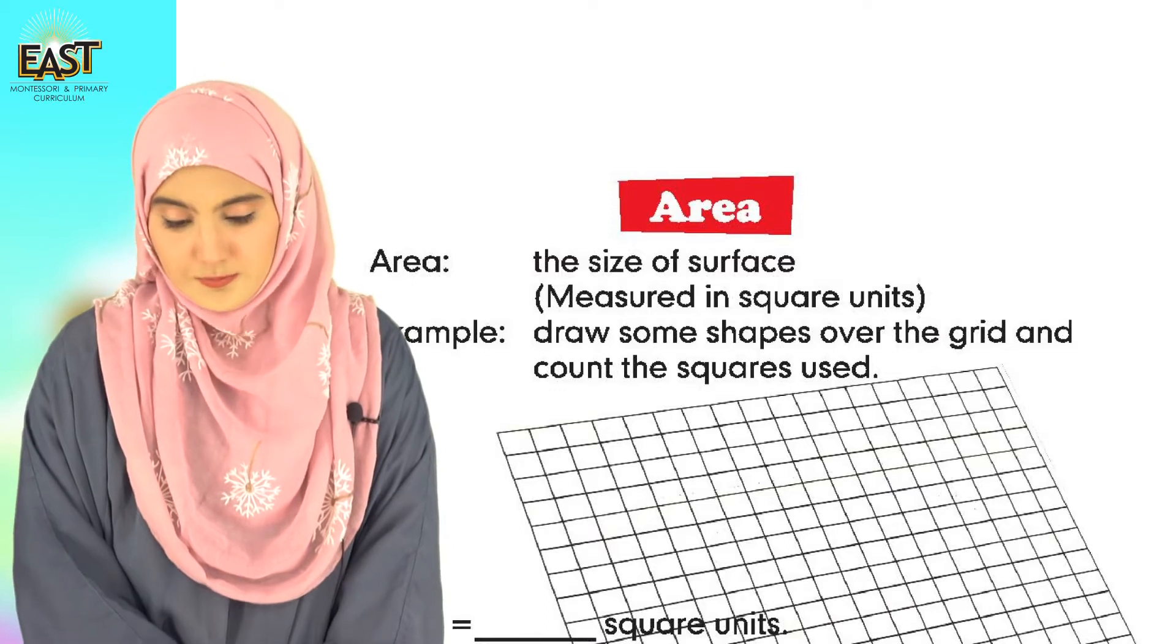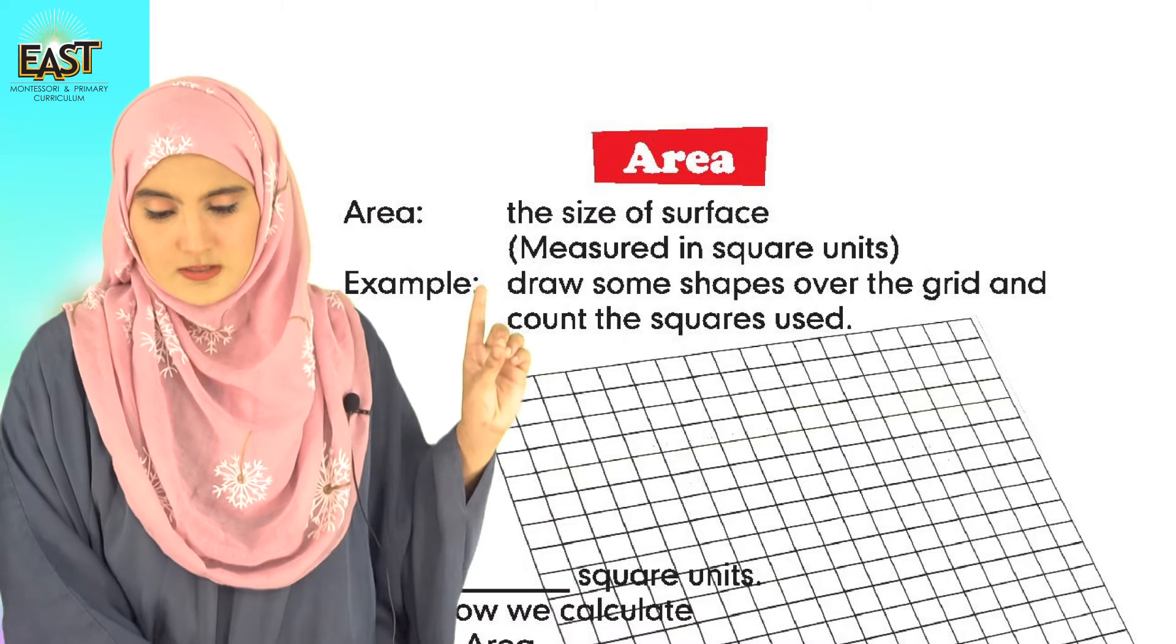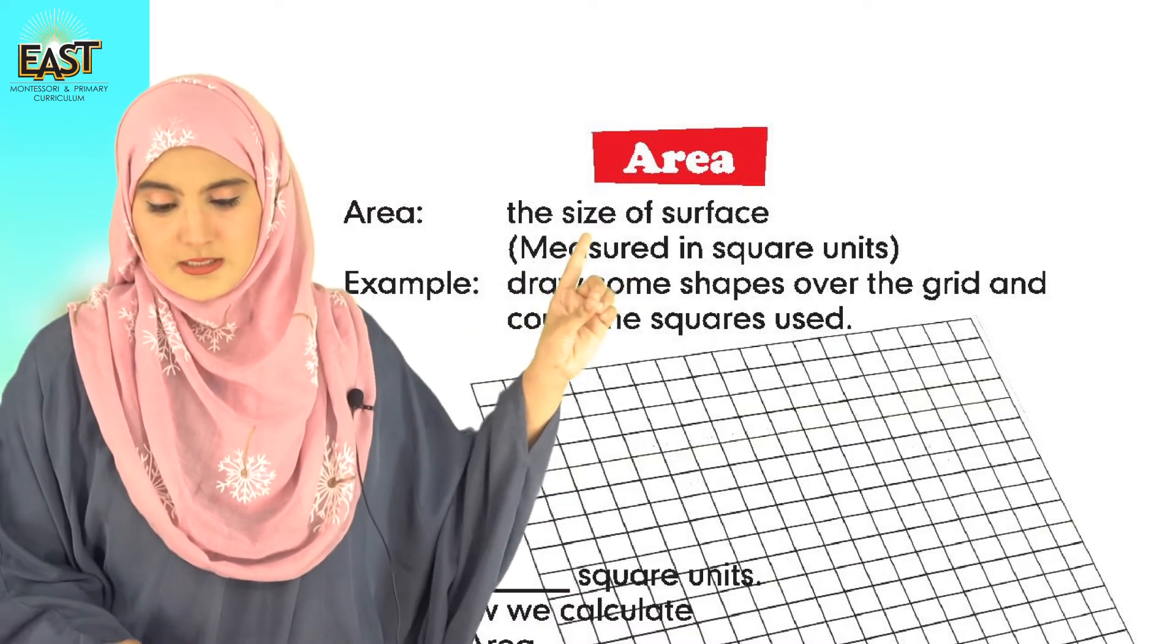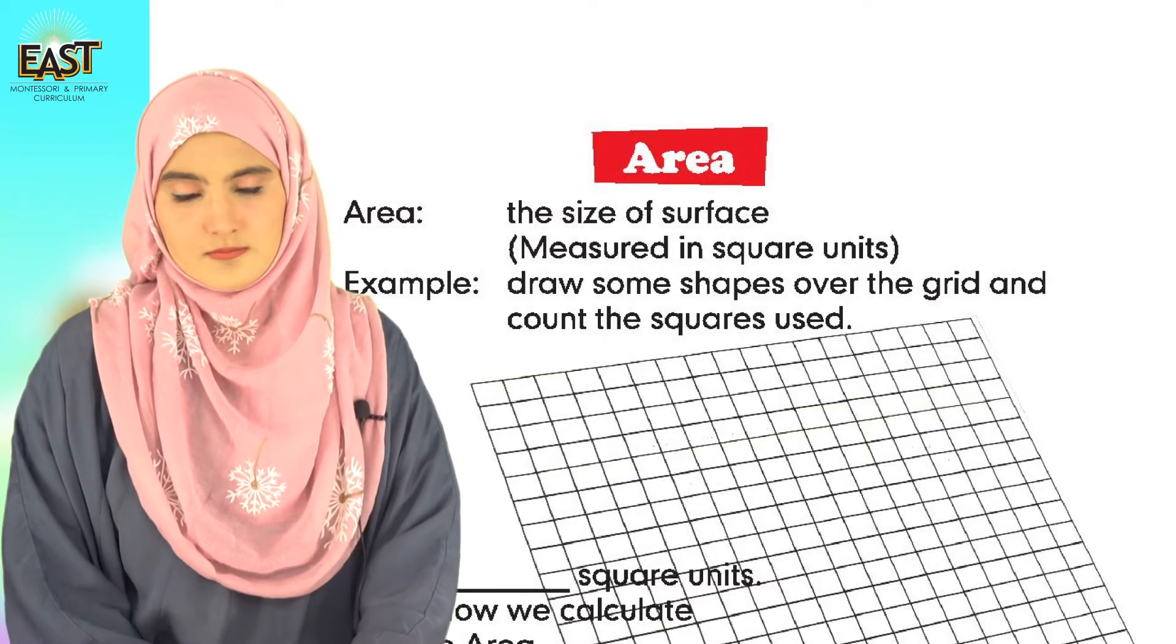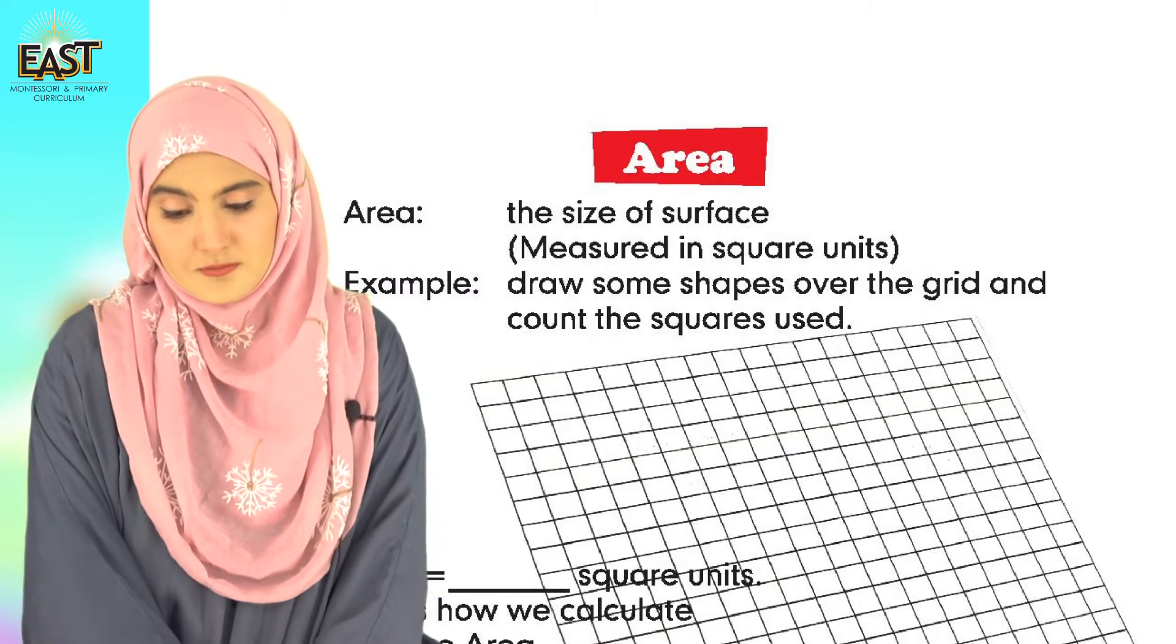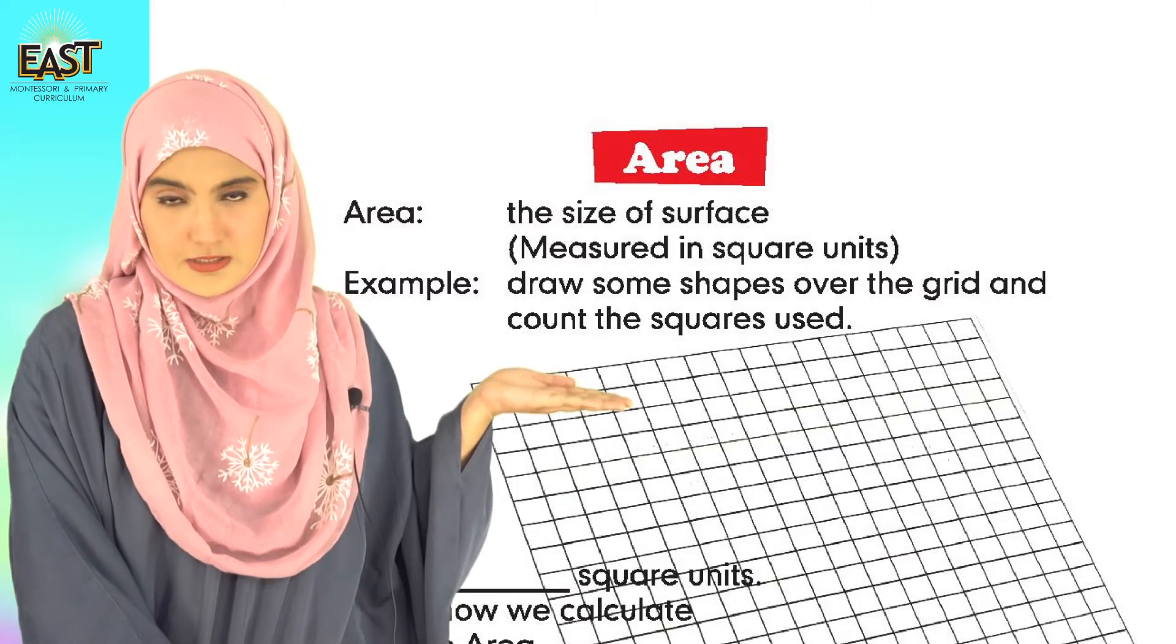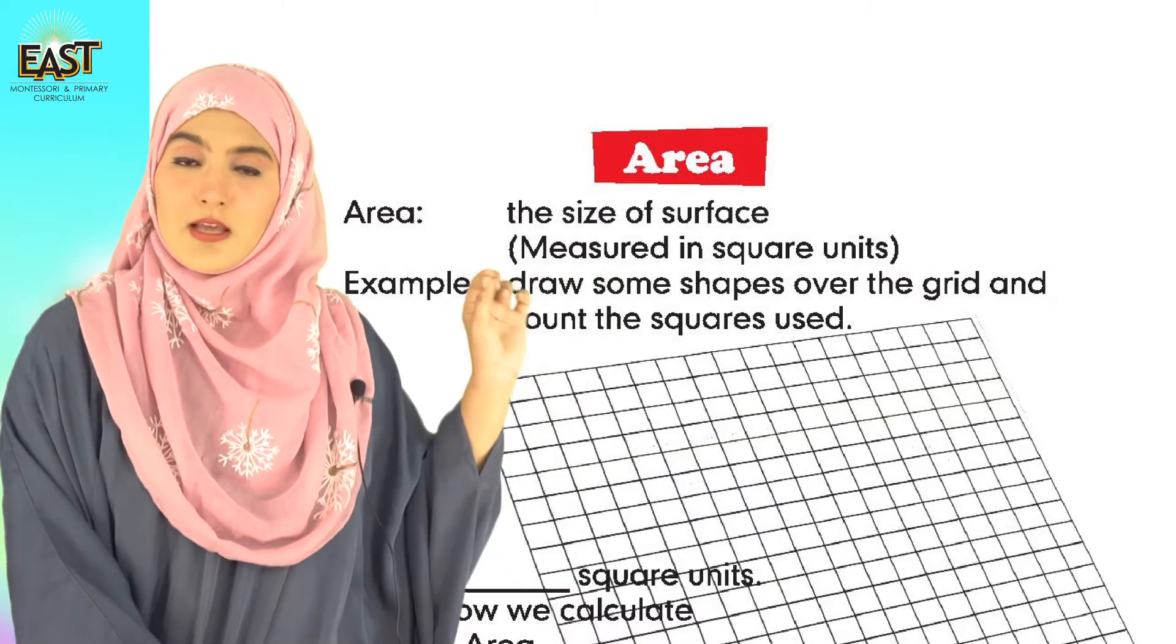You can see on your books on page number 86: draw some shapes over the grid and count the squares used. You have to draw some shapes on this grid which is given here and count the squares used.